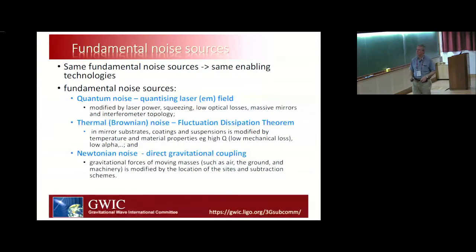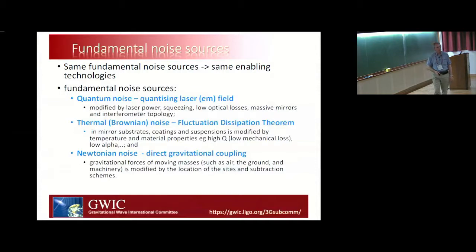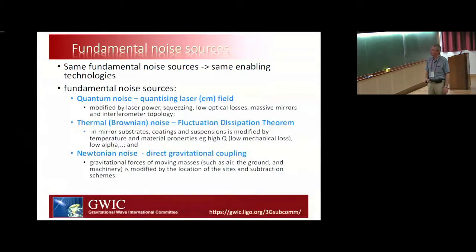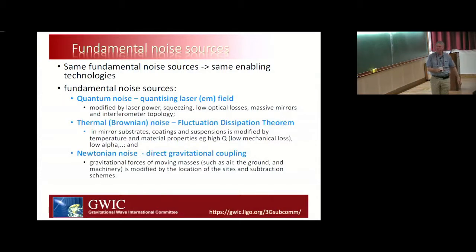Every photon counts. We've used massive mirrors as Rana pointed out, and we can modify using interferometer topology — building things like speed meters. For thermal Brownian noise, the fluctuation-dissipation theorem affects mirrors, substrates, coatings, and suspensions, modified by changing temperature and material properties. You want high-Q materials — things that ring at very high Q — so away from resonance the background noise is low. You want to modify things like the coefficient of thermal expansion to eliminate thermoelastic noise by choosing the right materials and operating temperatures.